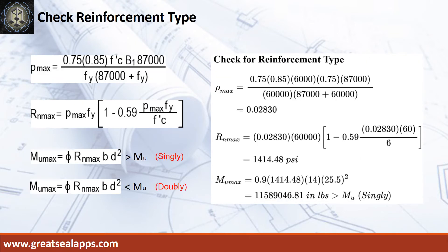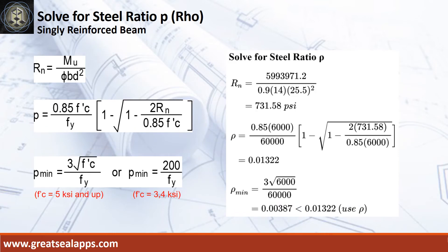The ρ-max from the given design criteria is 0.0283. The maximum concrete beam design ratio Rn-max equals 1,414.48 psi. The maximum moment from the given section, MU-max, equals 11,589,046.81 inch-pounds, which is greater than the maximum design moment MU. Given maximum moment equals 5,993,971.2 inch-pounds, resistance factor equals 0.9, b equals 14 inches, and d equals 25.5 inches.